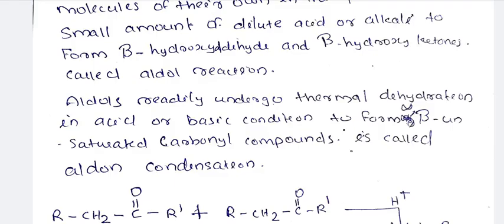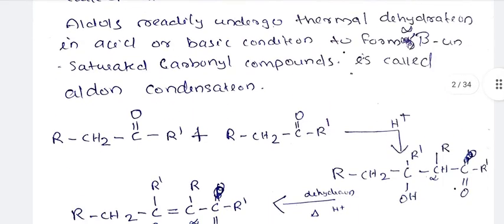Aldehydes or ketones having an alpha hydrogen: two molecules react among themselves to form an alpha, beta unsaturated carbonyl compound. Alpha, beta unsaturated means that we have a double bond. That is why we use aldol condensation. Now we have an example.